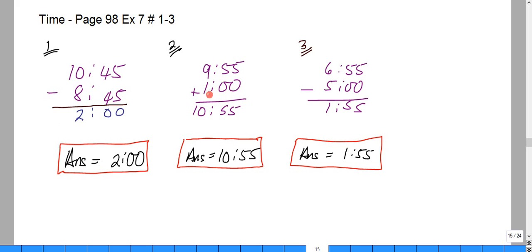So here we have an hour and we would say 0 plus 5 is 5, 0 plus 5 is 5, and 9 and 1 would give us 10. So our answer would be 10:55.